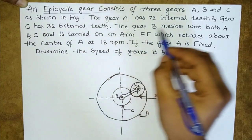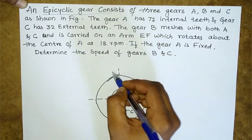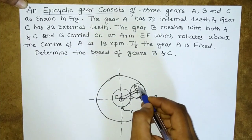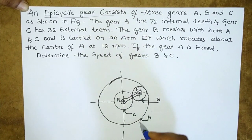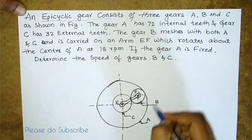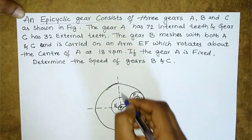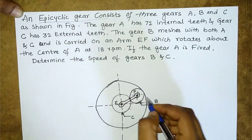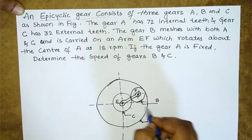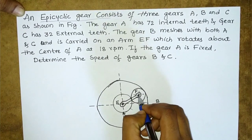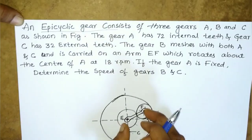In this problem, three gears A, B, and C are given. Gear A is the internal gear. Gear A and gear C are connected to one shaft, and gear B is another gear having its own shaft. Gears C and B are connected with one arm.